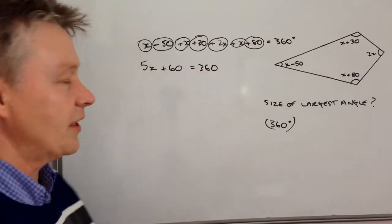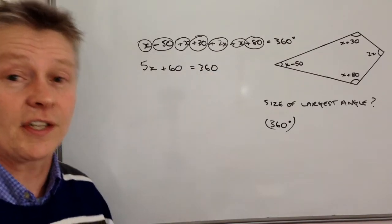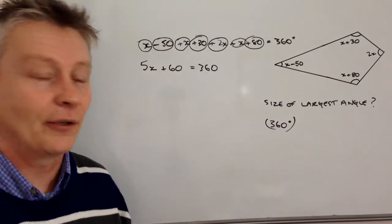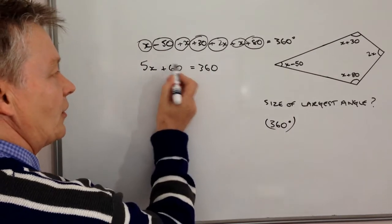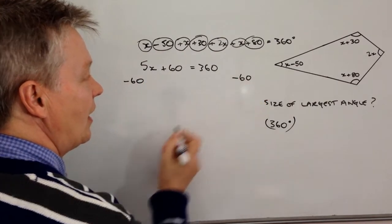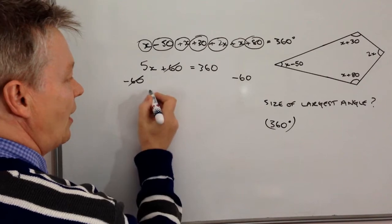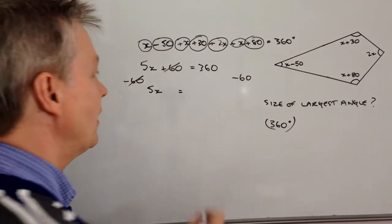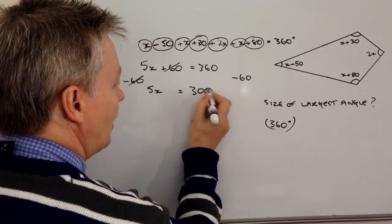And then it's really just a case of using this equation as a linear equation and solving for X. In other words, finding out the value of X. Now in this case, I've got 60 here, so I'm going to minus 60 from both sides. If I do that, I can lose that and I get 5X equals 360 minus 60 is going to be 300.